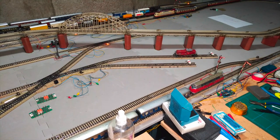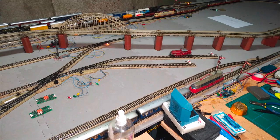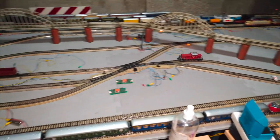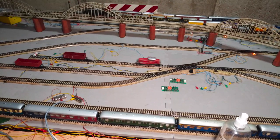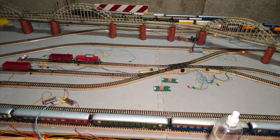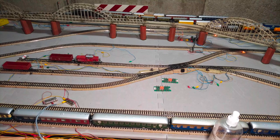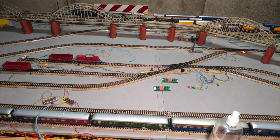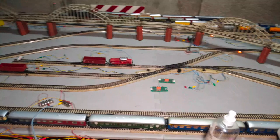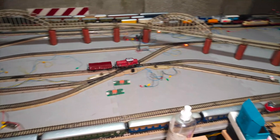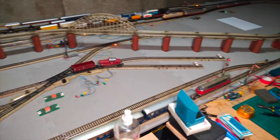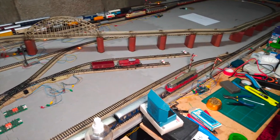There it will reverse again and go over the crossing this time straight across to pick up the car there. Then it will reverse again, pull the car and go this time to the first locomotive siding. And the process will start from scratch.